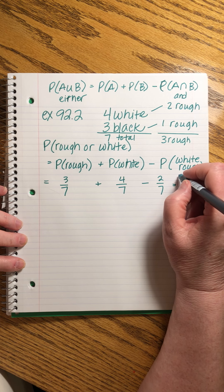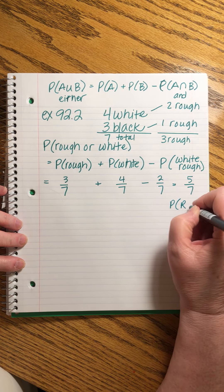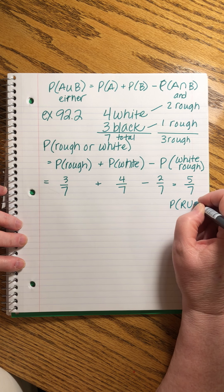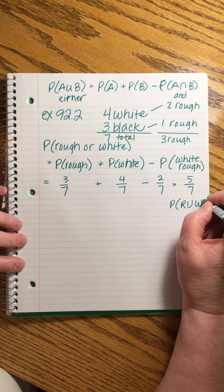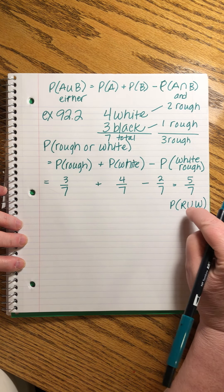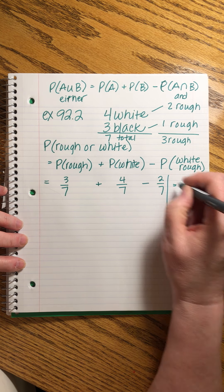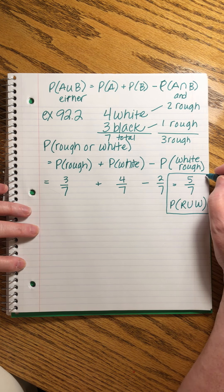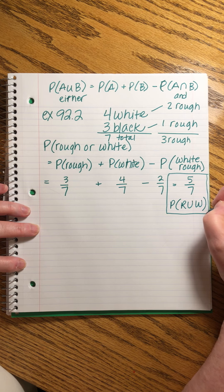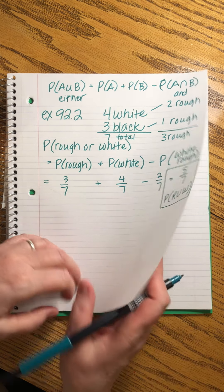We can write that as P of R union W — rough or white — and that is our answer. The probability of either is done.